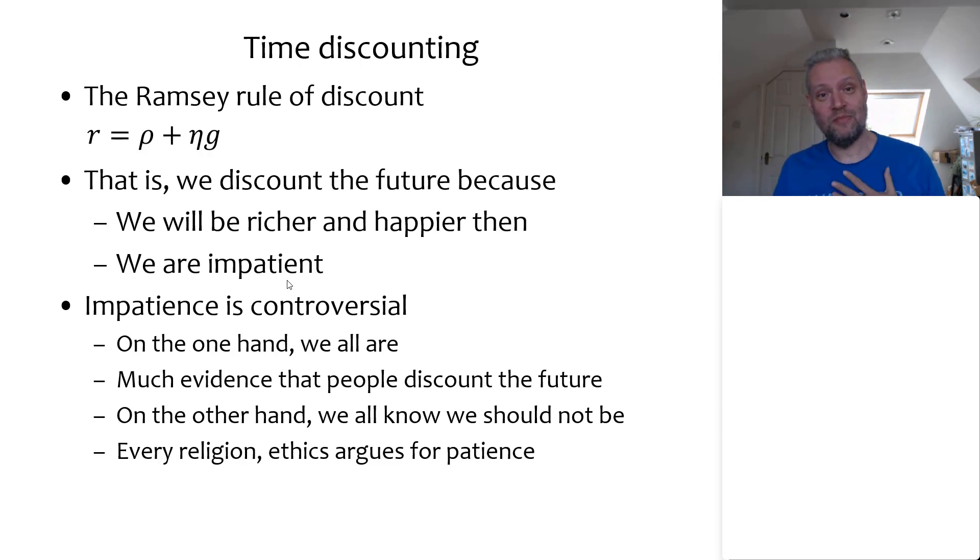But essentially, if you're talking about a multi-generational problem like climate change, essentially what you say when you discount is that people who are born later than me are worth less than me. And if you phrase it like that, then it becomes clear immediately that this is a very particular position to hold.